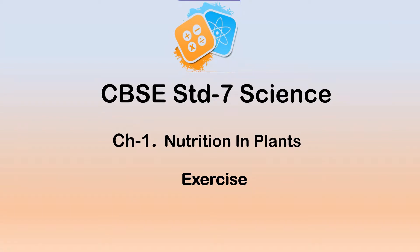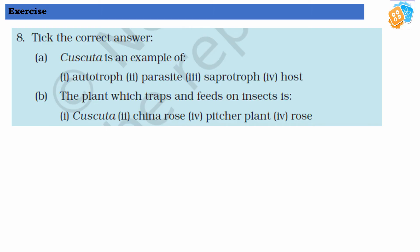Welcome students. Question number 8, take the correct answer. Cascata is an example of — Cascata is another name for Amarbel, so Cascata is an example of a parasite.